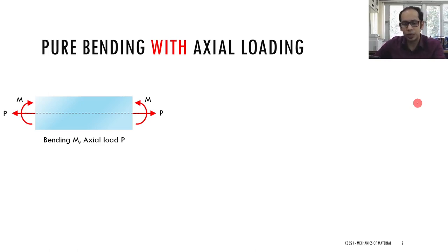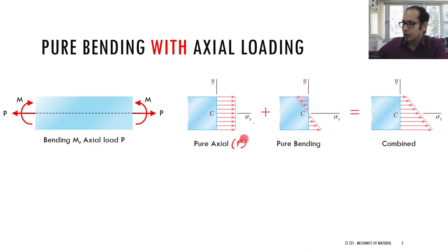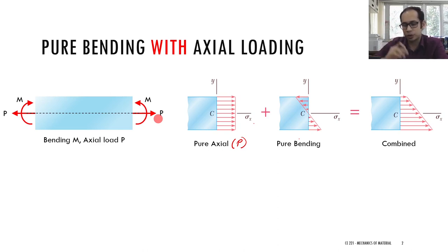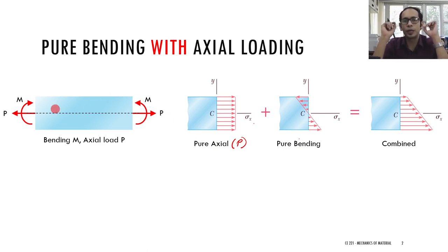Let us look at how the stresses vary. Due to the axial load P, the stress distribution is P divided by A — since P acts exactly at the centroid, the stress distribution is uniform across the cross section, as we established in the chapter on axial loading. Then there is the stress due to pure bending M, where across the length of the member the bending moment does not change.